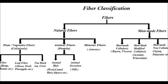Vegetable fibers or plant fibers are thread-like filaments and structural material that is cellulose of plants. They are obtained from various parts of the plant. Animal fibers are made up of proteins. Wool and silk are two natural fibers obtained from animals.